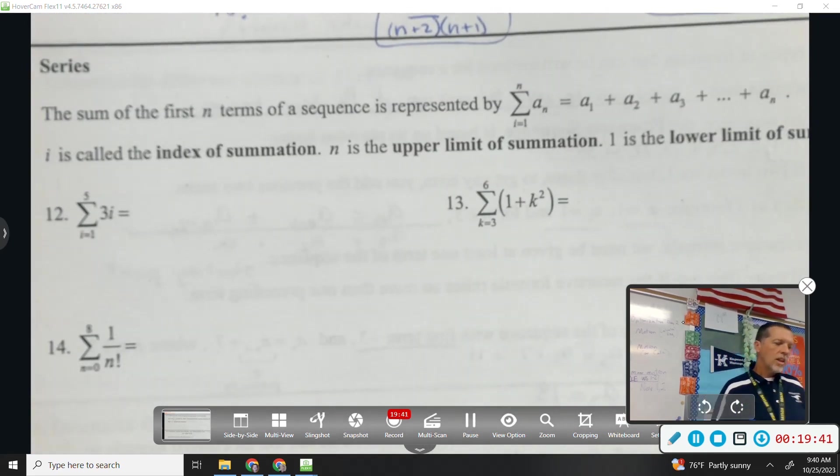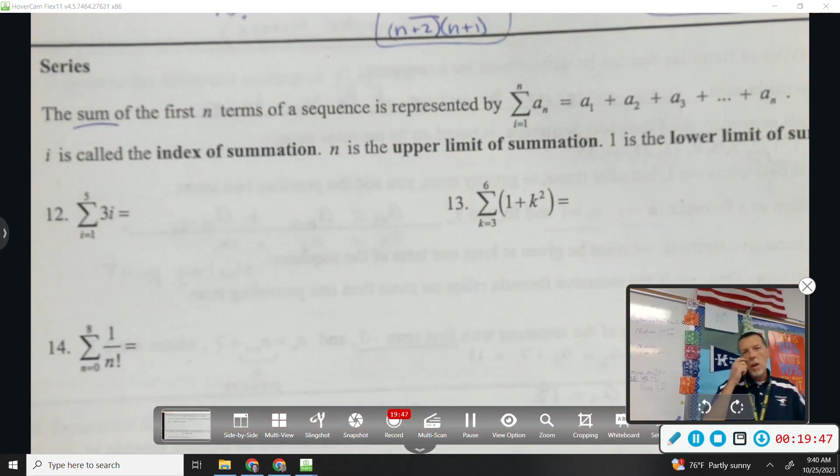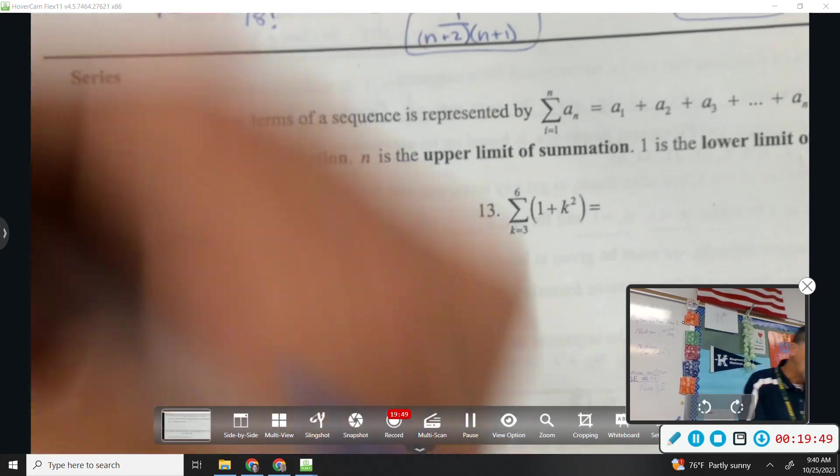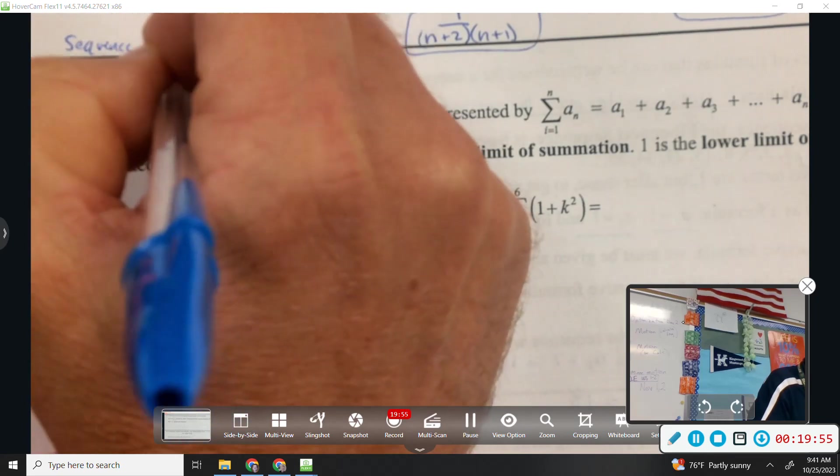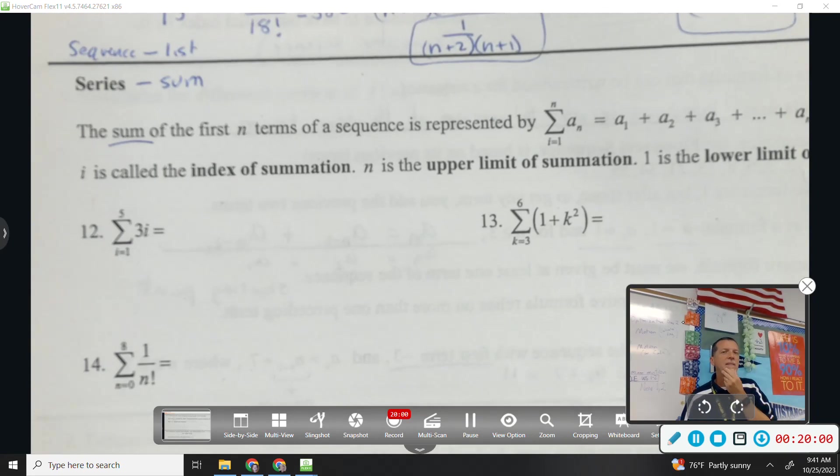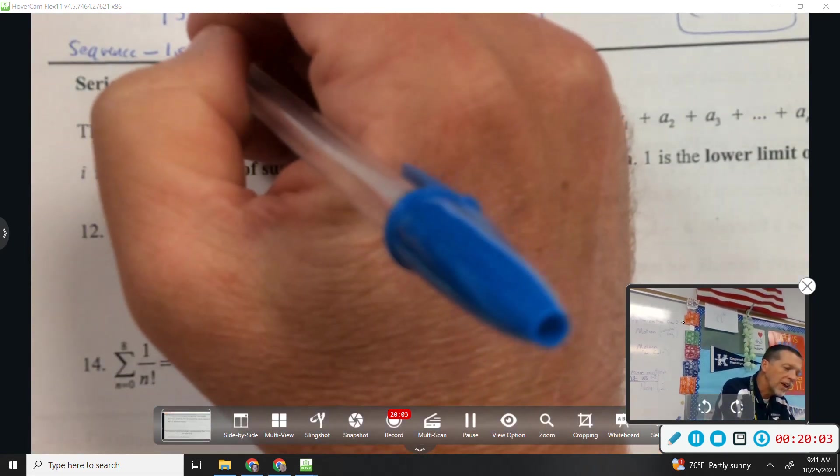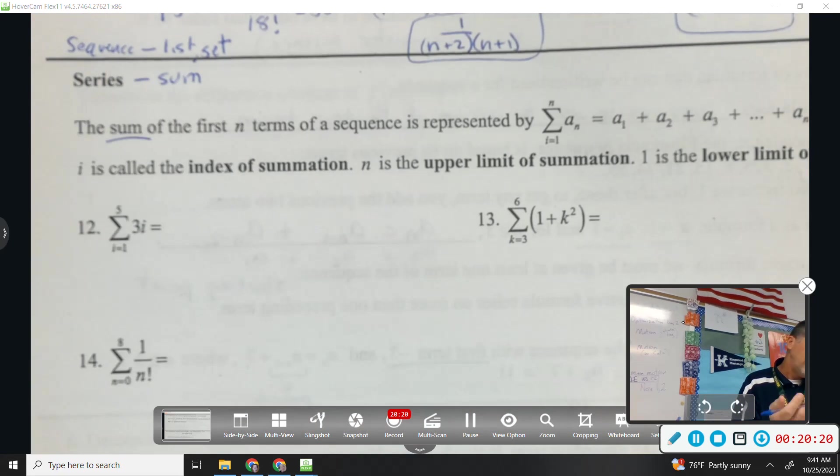All right, series. A series is a sum of numbers. So the sequence is a list of numbers. And a series is a sum of numbers. Or if you want to be really confusing and make them all start with S, a sequence is a set and a series is a sum. Now, the good news is, I don't know that we ever specifically test that so that if you got those backwards, you'd be in trouble. You'll be able to tell by the problem what we want you to do. So, not a big deal.